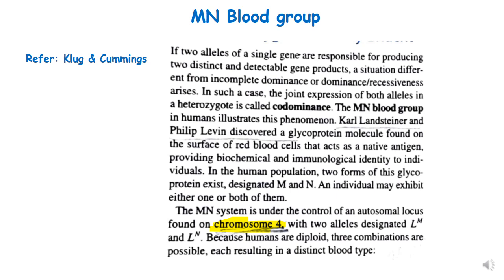Karl Landsteiner and Philip Levine discovered that a glycoprotein molecule found on the surface of RBCs acts as a native antigen, which provides biochemical and immunological identity to individuals. In the human population, there are two forms of this glycoprotein called M and N. An individual may contain only M, only N, or both M and N.